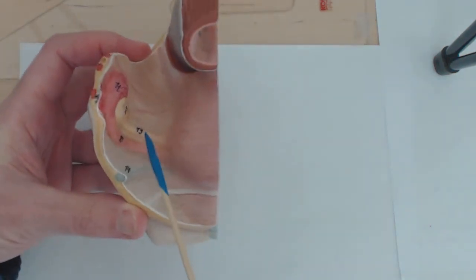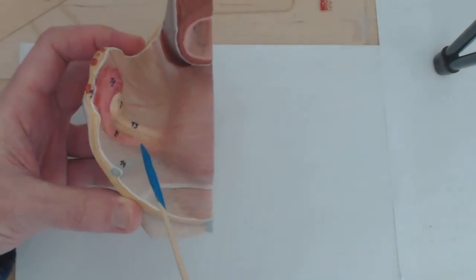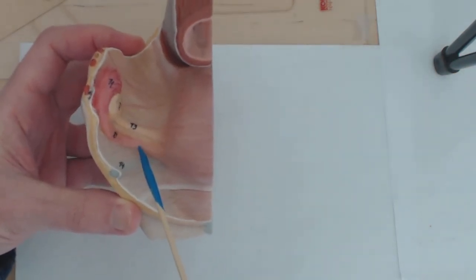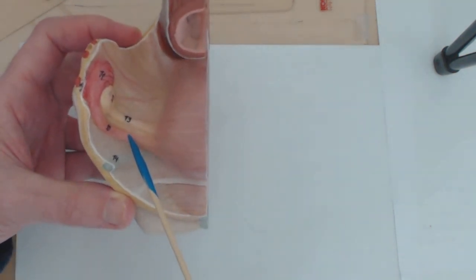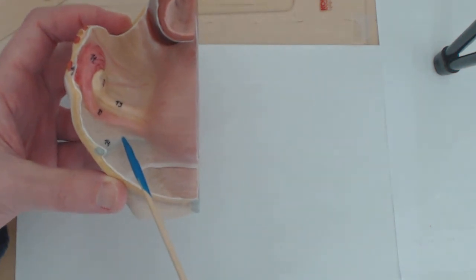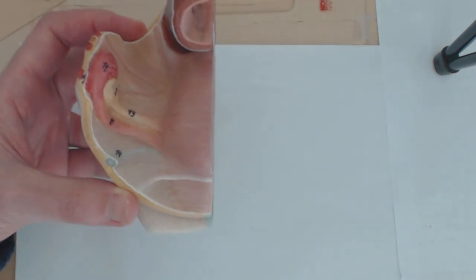And then finally, the ovarian ligament and the round ligament and the oviduct. Ovarian ligament, oviduct or uterine tube or fallopian tube, whichever term you want to use, for me at least, is fine. And then the round ligament of the uterus. Okay, gang. That's it for that. Thank you for joining me, and good luck.